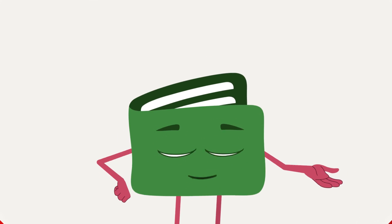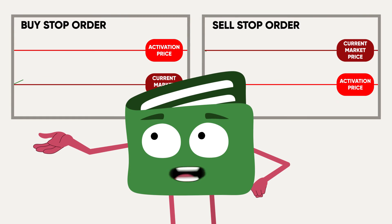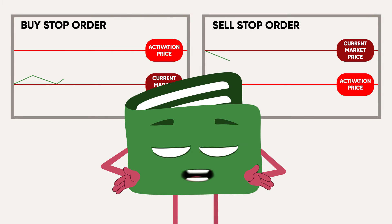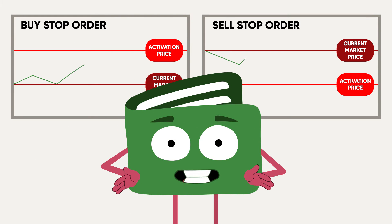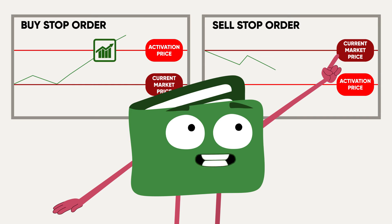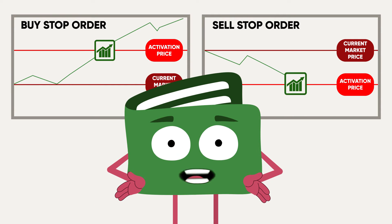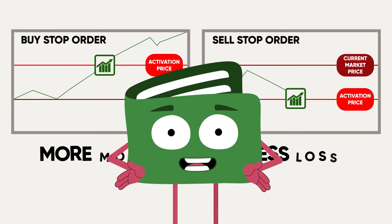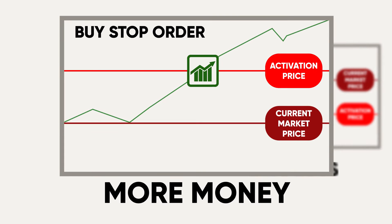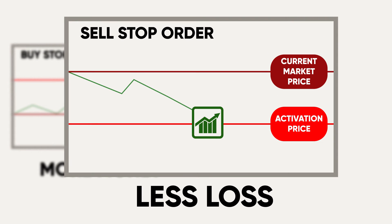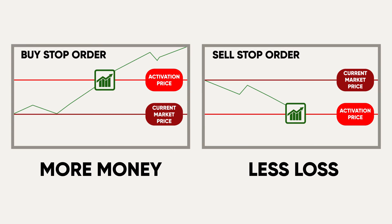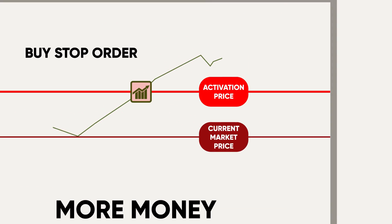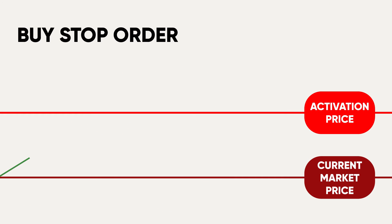So basically, a buy stop order is used to enter a position when a stock is trending upwards. In layman's terms, the first approach is designed to earn you money, while the second one is supposed to prevent you from losing money. Sounds pretty neat, but as always, there is a catch.